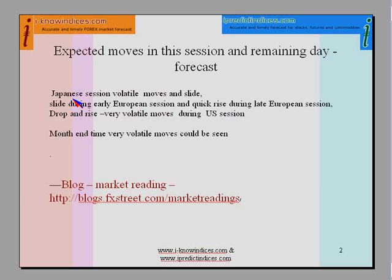With regard to the expected market moves for today: during the Japanese session there will be a volatile move, and towards the close of the Japanese session they will make a slide — then a slide during early European session, meaning about 30 to 50 pips quick move downward or a slow move, depending on the time they started. If they start around 7:00, then between 7:00 and 7:30 they could drop very quickly. If they start around 6:30, there will be a slow drop. Then during the gap time they will slightly firm up and open lower during early European session.